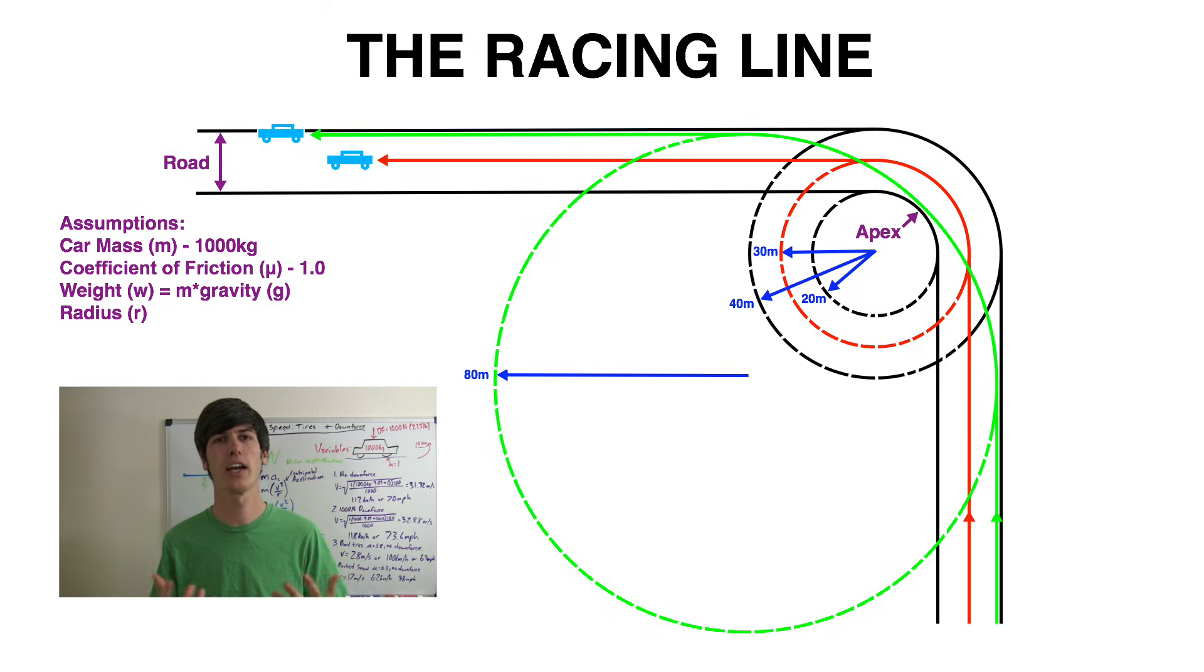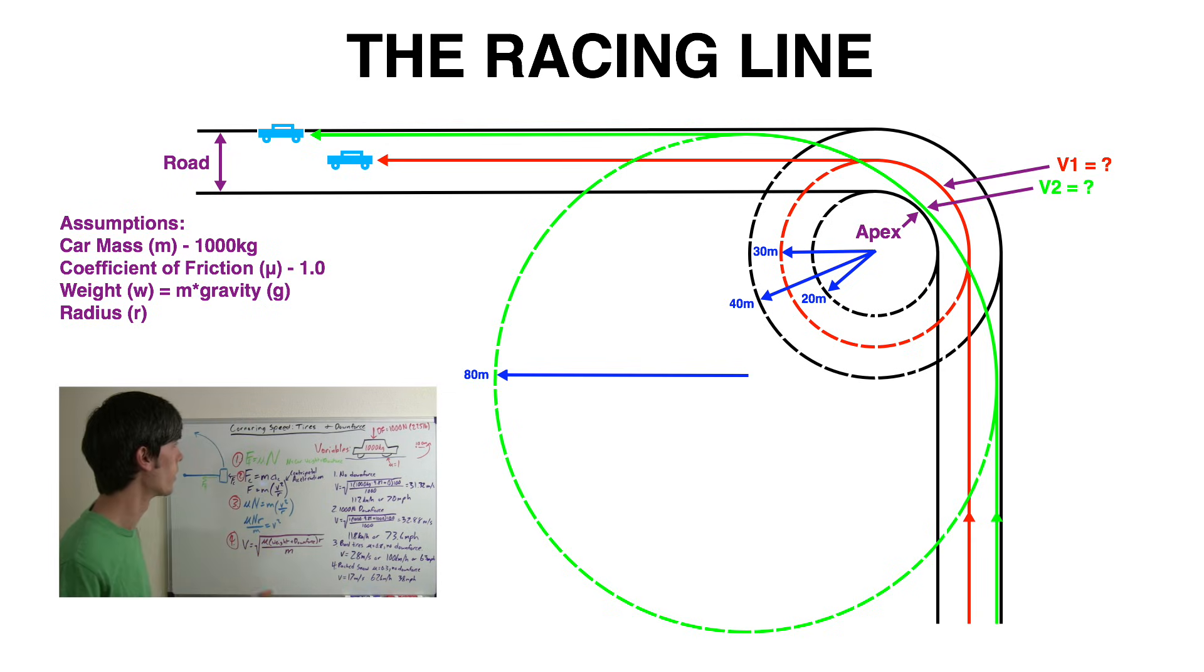We'll be finding out what the speed of the car is at the apex as this is the point where it's under primarily only lateral g's, as to maximize the speed around the corner you'll be braking before reaching the apex and accelerating after reaching the apex based on the traction circle of your tires.